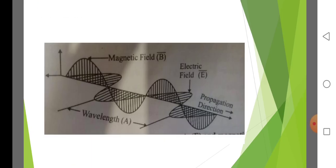In this diagram, it is shown that electromagnetic radiation is the combination of electric and magnetic fields which are perpendicular to each other and also perpendicular to the direction of propagation.